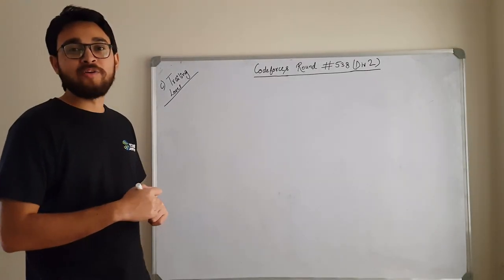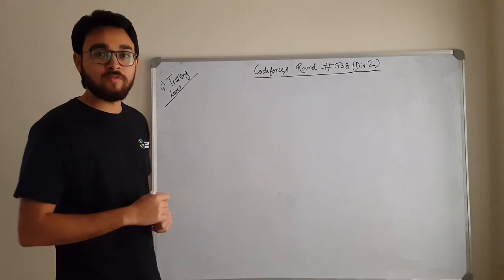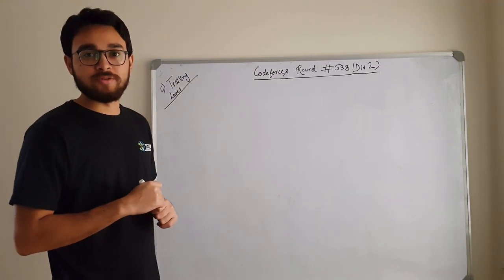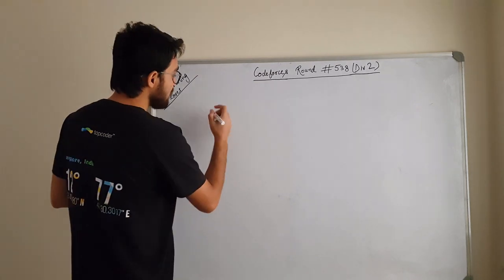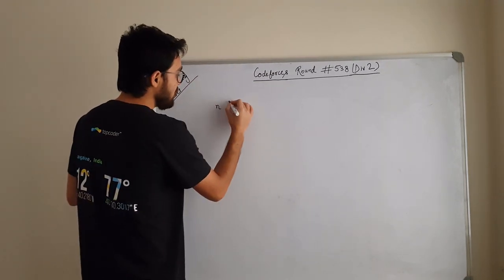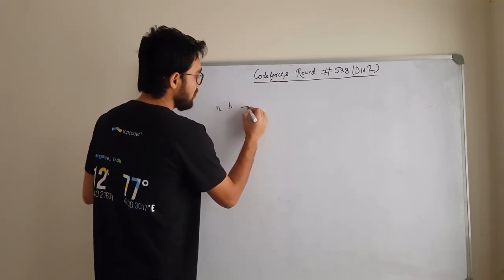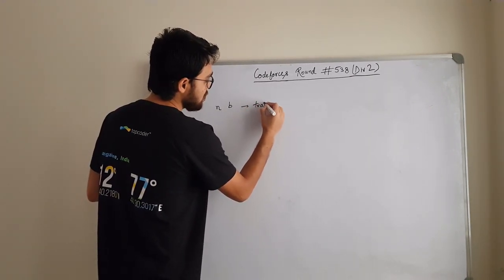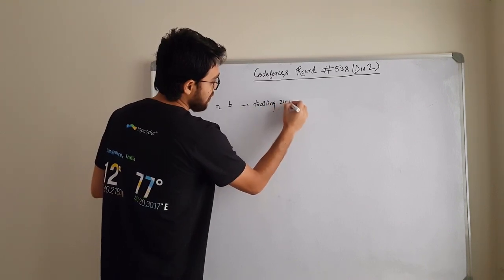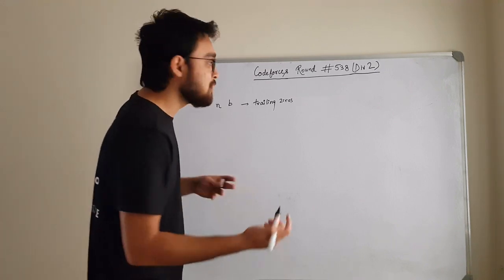Hello everyone. Today we will be discussing problem C from Codeforces round 538. For a detailed problem statement, follow the link in the description. What you are given is N and B, and what you need to tell is the number of trailing zeroes in N-factorial represented in base B.